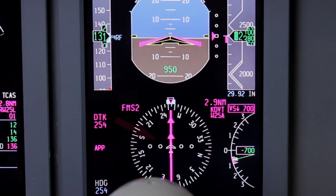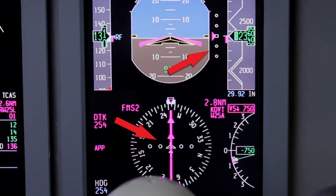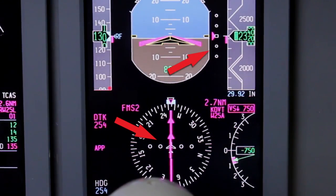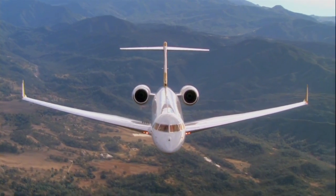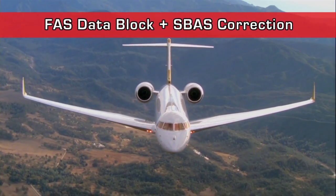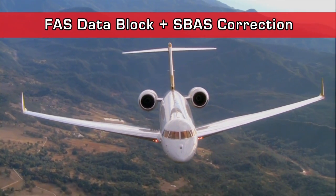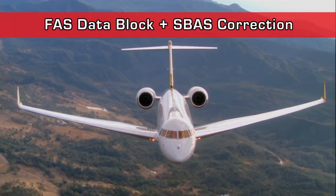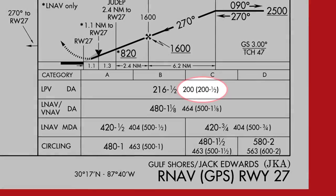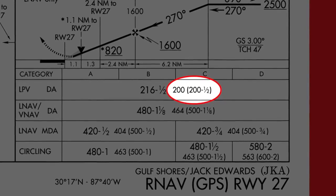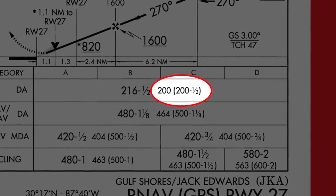The FAS data block contains the lateral and vertical parameters that define the approach to be flown. An RNAV approach with LPV minimums combines information from the FAS data block with highly accurate SBAS correction signals to produce an approach that closely mimics an ILS. This increased accuracy allows LPV approach minimums to be as low as 200 feet and one-half-mile visibility.